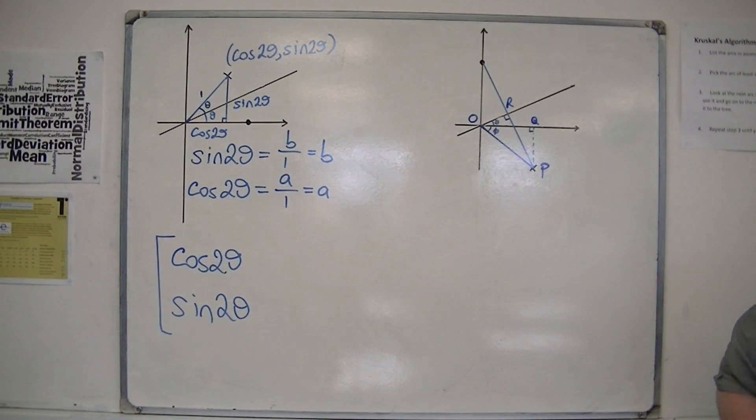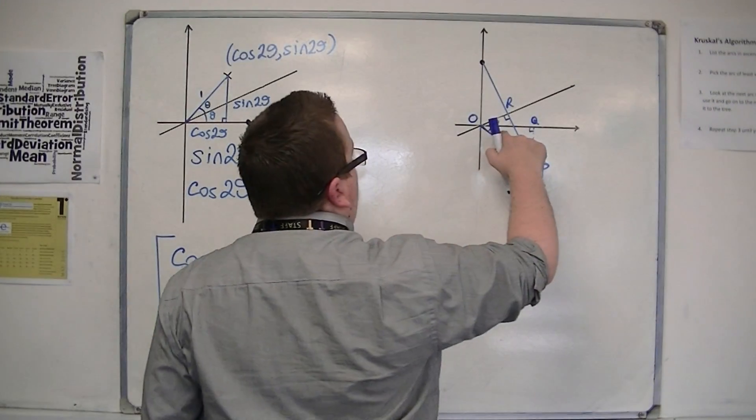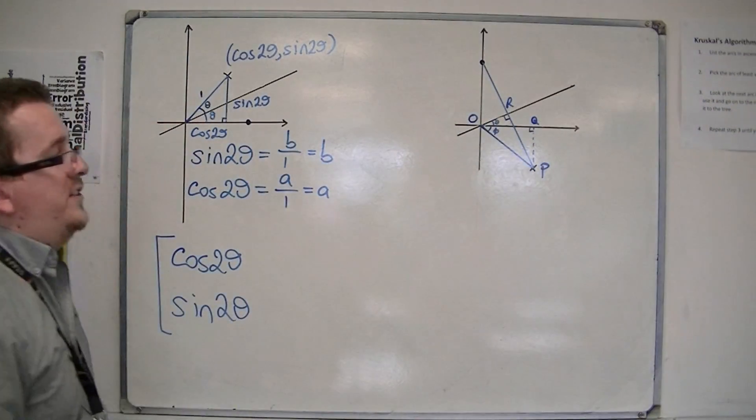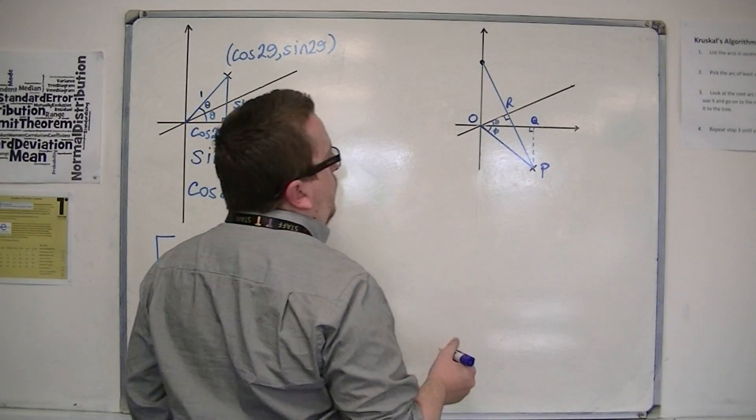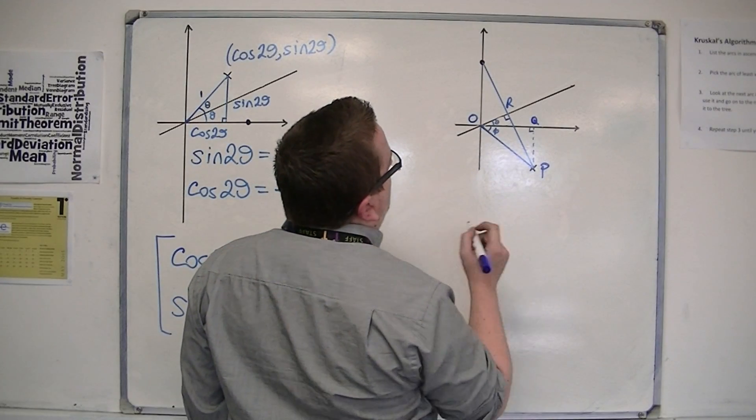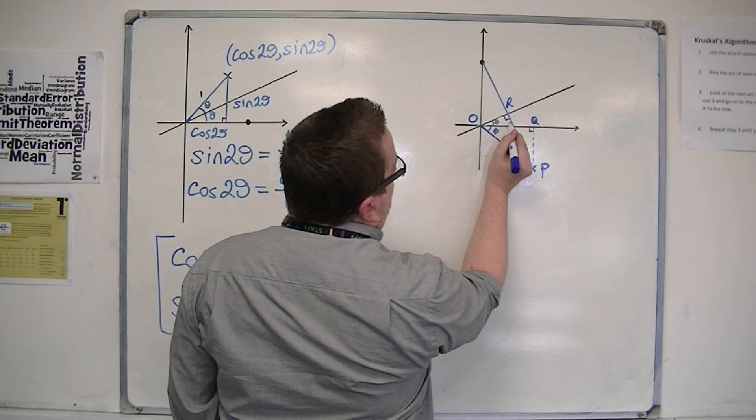So what do I want to do? If I look at the angle ORP or the triangle ORP rather, then really what I want to do is identify what phi is in terms of theta.